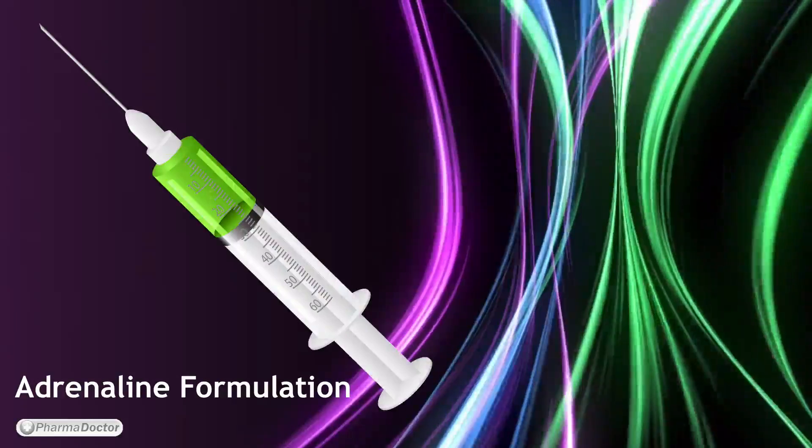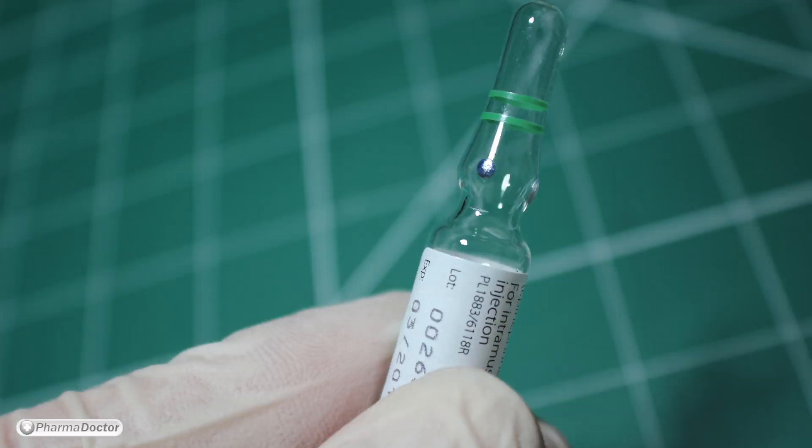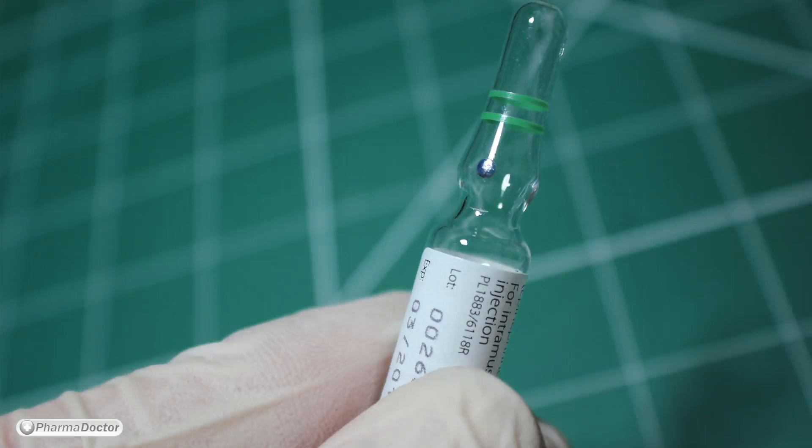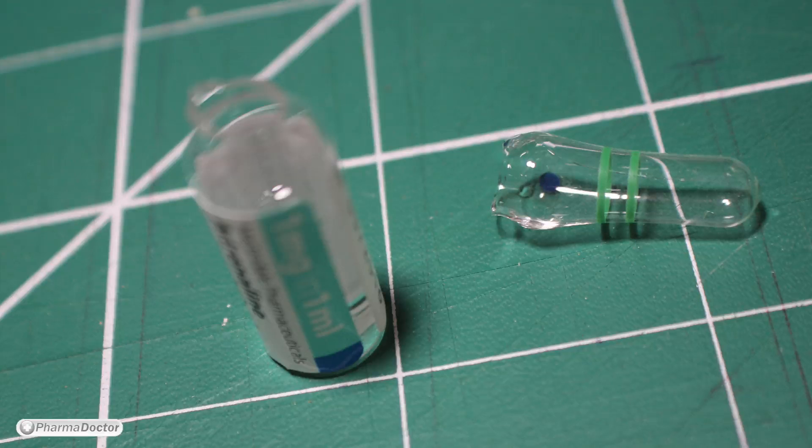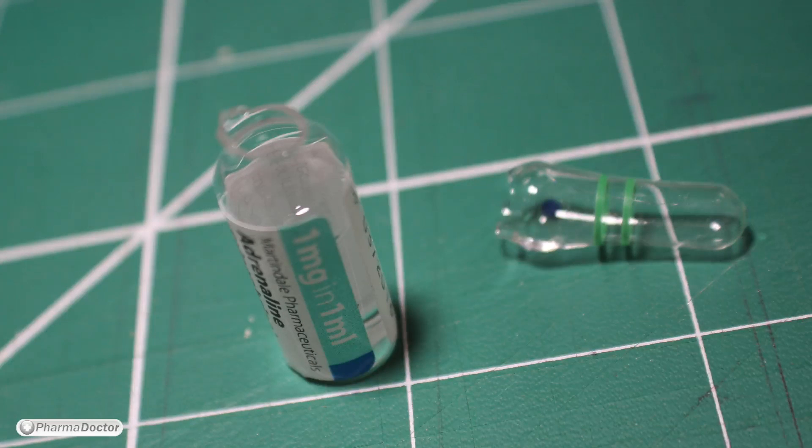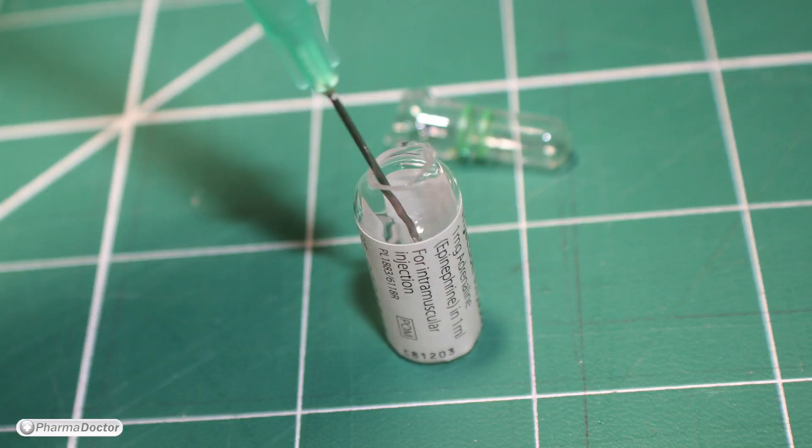This part of the update addresses confusion as to which formulation to use during an anaphylaxis. In our training video it was mentioned you have three options. As per Resuscitation Council guidance your first line choice should be ampoules, a 1 ml syringe and appropriate length needles.